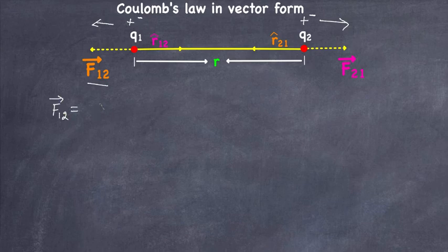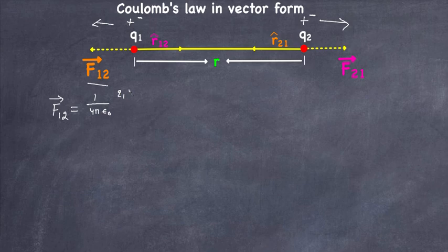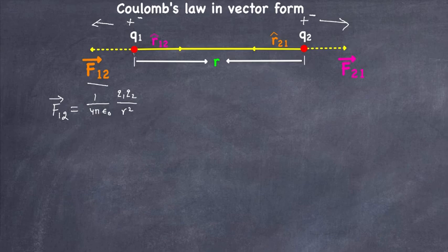We're going to write the Coulomb's force formula, or electrostatic force formula from Coulomb's law, which is 1 over 4 pi epsilon naught, times q1 q2 over r squared. We're going to include the direction on the right-hand side as well. This is basically the force on charge q1 due to charge q2.